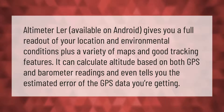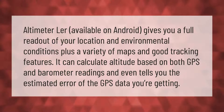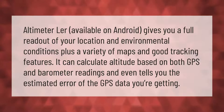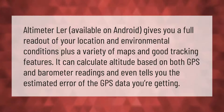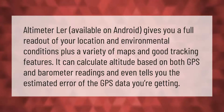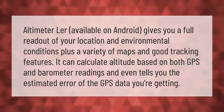Altimeter Lure, available on Android, gives you a full readout of your location and environmental conditions, plus a variety of maps and good tracking features. It can calculate altitude based on both GPS and barometer readings, and even tells you the estimated error of the GPS data you're getting.